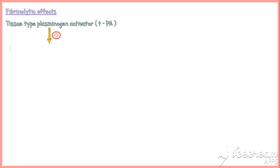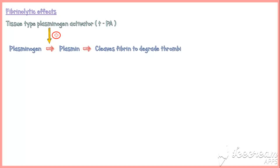Fibrinolytic effects are aimed at lysing the clots after fibrin deposition. Endothelial cells produce tissue-type plasminogen activator, which induces the conversion of inactive plasminogen into its active form, plasmin. Then plasmin cleaves fibrin to degrade thrombi.